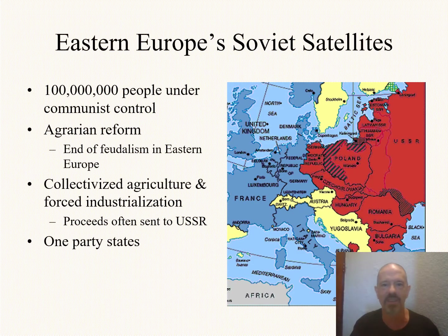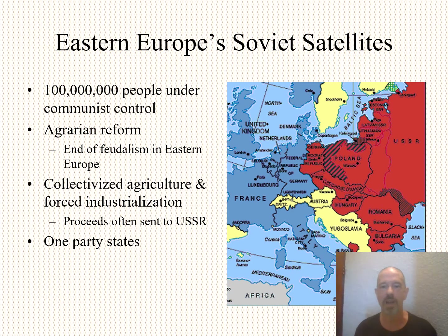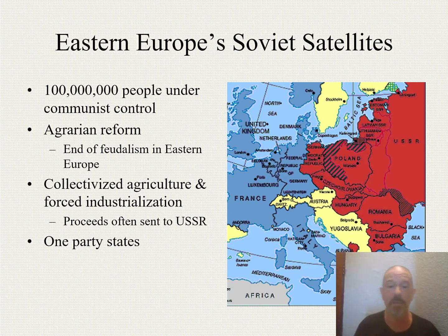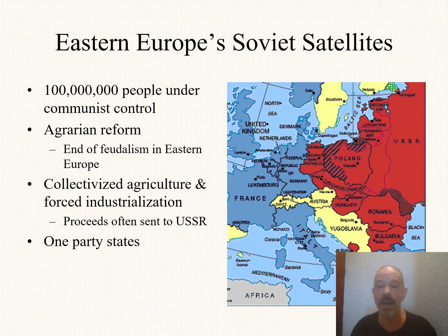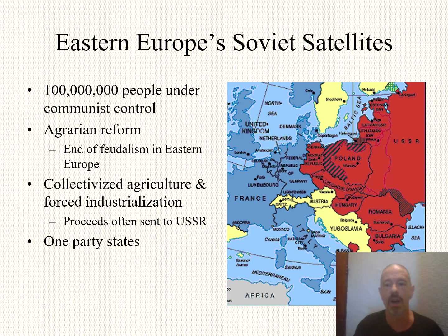In the Eastern European countries, you've got about a hundred million people under communist control, in addition to Russia, China, North Korea, and the areas where there are communist insurgencies around the world. Some of this stuff works fairly well — the end of feudalism, which had not really ended in parts of Poland and Eastern Europe. The collectivist agriculture imposed through much of Eastern Europe is probably in some ways more efficient, but most of the benefits go back to the Soviet Union themselves. People are eating within these countries, some people are benefiting, but the standard of living remains far, far behind the West. And yes, one-party state.